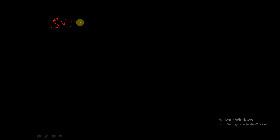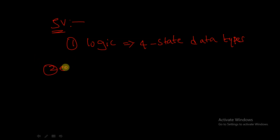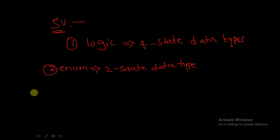In SystemVerilog, we are introduced to new data types. The first one is called the logic data type, which is also a four-state data type. The next new data type is enum, which is basically a two-state data type. And next is typedef, which is also a data type.